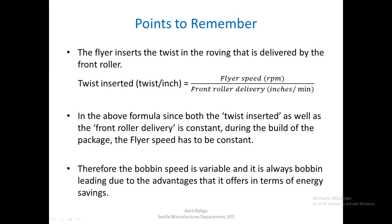Therefore, the bobbin speed is the one made variable so that winding takes place. This we have discussed in the earlier lecture — it is always bobbin leading. The bobbin leading arrangement has advantages in terms of energy savings. So we conclude that flyer speed is constant on conventional roving frames, and whatever variable speed is needed must be given to the bobbin, which must be a bobbin-leading roving frame.